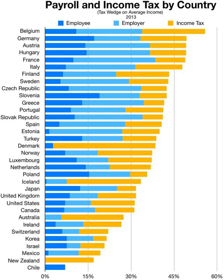In the territorial system, only local income — income from a source inside the country — is taxed. In the residential system, residents of the country are taxed on their worldwide income, while non-residents are taxed only on their local income. In addition, a very small number of countries, notably the United States, also tax their non-resident citizens on worldwide income. Countries with a residential system of taxation usually allow deductions or credits for the tax that residents already pay to other countries on their foreign income. Many countries also sign tax treaties with each other to eliminate or reduce double taxation.